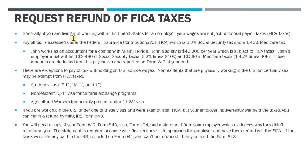Looking at an example: John is an accountant for a company in Florida, he makes $40,000 a year, which is all subject to FICA. John's employer has to take $2,480 of Social Security tax out of his paychecks throughout the year — that's 6.2% times $40,000 — and then $580 in Medicare, which is 1.45% times his $40,000 salary. These amounts are deducted from his paychecks and reported on a Form W-2 at year-end.